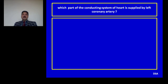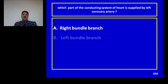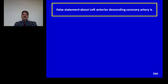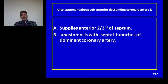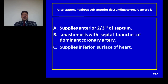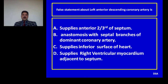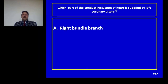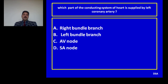Question 7: Which part of the conducting system of the heart is supplied by the left coronary artery? Options: right bundle branch, left bundle branch, AV node, SA node. Answer: All parts of the conducting system are supplied by the right coronary artery except the left bundle branch, which is supplied by the left coronary artery. Question 8: All statements about the left anterior descending coronary artery: supplies anterior two-thirds of the septum, anastomoses with the septal branch of the dominant coronary artery, supplies inferior surface of the heart, supplies right ventricular myocardium adjacent to the septum. Answer: C — supplies inferior surface of the heart — is incorrect. The inferior surface is supplied by the posterior interventricular artery, which can come from the right or left coronary artery or both.